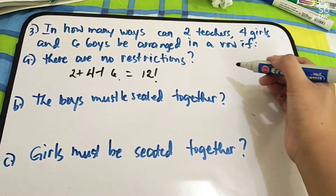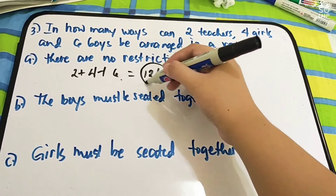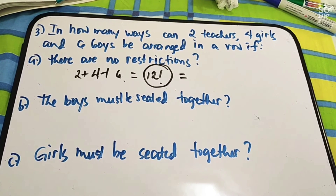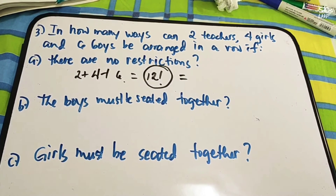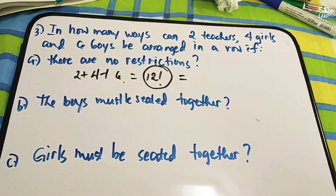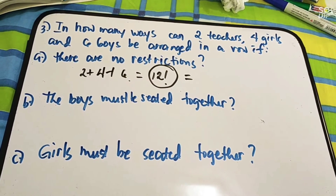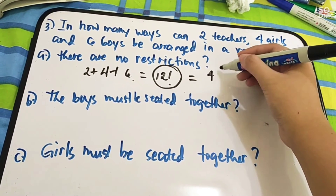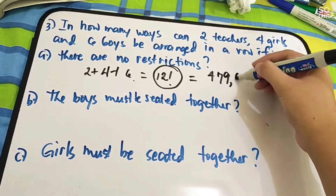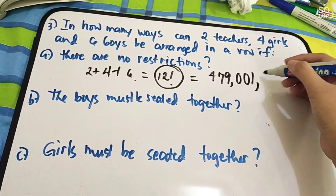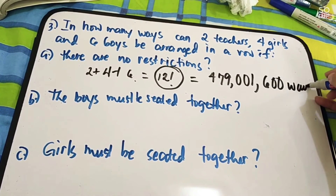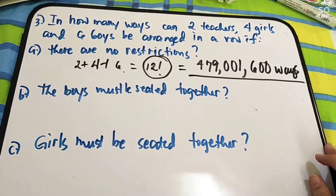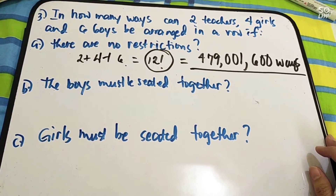So, we have twelve factorial lang po yan. If you are going to simplify twelve factorial, that is twelve times eleven times ten times nine times eight times seven times six times five times four times three times two times one. Just multiply that — the answer is 479,001,600 ways. That is the answer for letter A.